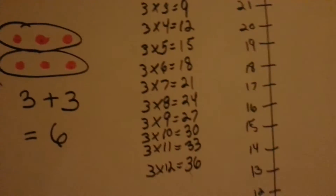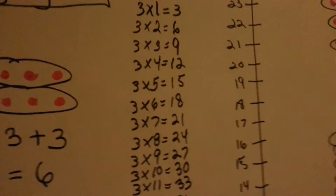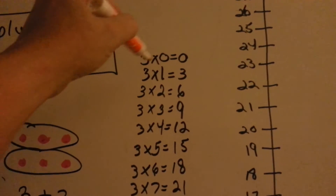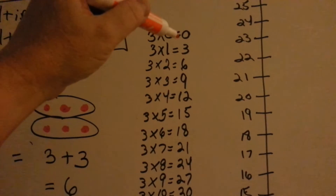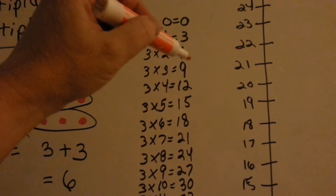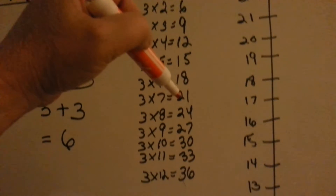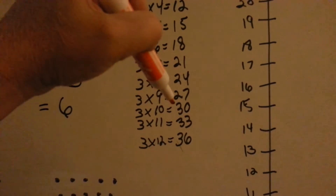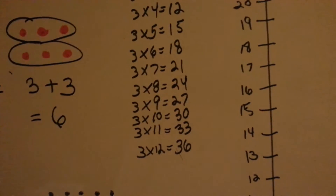Now let's take a look at the 3 times table. Starting with 0, of course, 3 times 0 is going to be 0, and the answers are going to jump by 3's: 3, 6, 9, 12, 15, 18, 21, 24, 27. 3 times 10 is 30, of course, then 33 and 36.